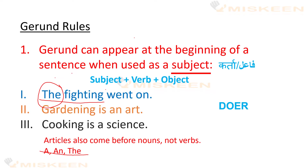Doosera sentence: Gardening is an art — baagbani eek fun hai. Yehaan par baagbani ya gardening eek noun hai. Cooking is a science — khana pakana eek science hai. Yehaan par cooking subject ka kaam kar raha hai.